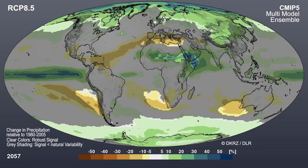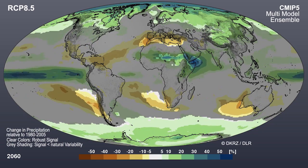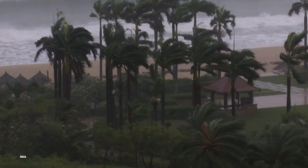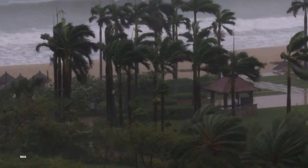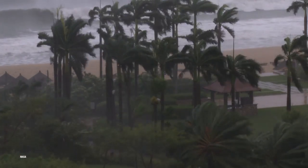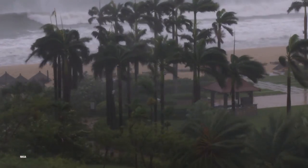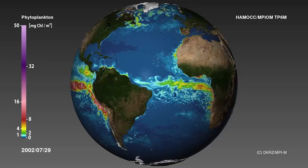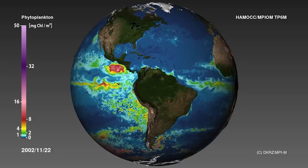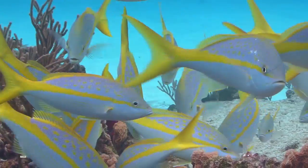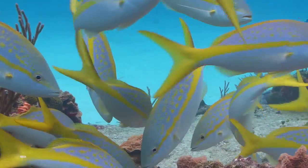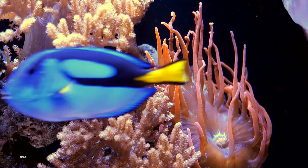CMIP outcomes are used for understanding climate change impacts — for example, precipitation, which is critical to agriculture and to human living conditions. Also, changes in the biogeochemistry of the oceans are critical for fisheries, and particularly ocean acidification, which has a profound effect on coral reefs.